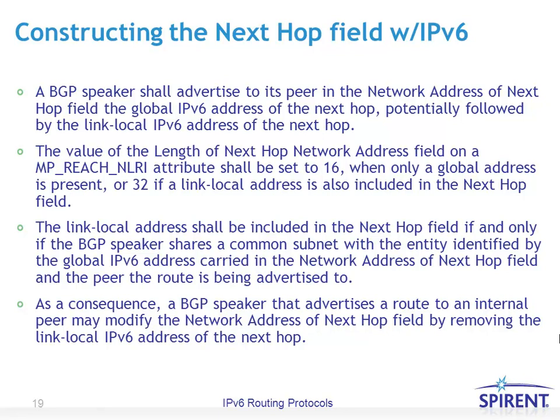When constructing the next hop field with IPv6, a BGP speaker shall advertise to its peer the global IPv6 address of the next hop, potentially followed by a link-local IPv6 address of the next hop. This is differentiated by the length of the next hop address field in the multi-protocol reachable NLRI attribute: set to 16 when only a global address is present, or 32 if a link-local address is also included. A BGP speaker includes the link-local address only if it shares a common subnet with the entity identified by the global IP address and the peer. Consequently, a BGP speaker advertising a route to an internal peer may remove the link-local IPv6 address from the next hop field.